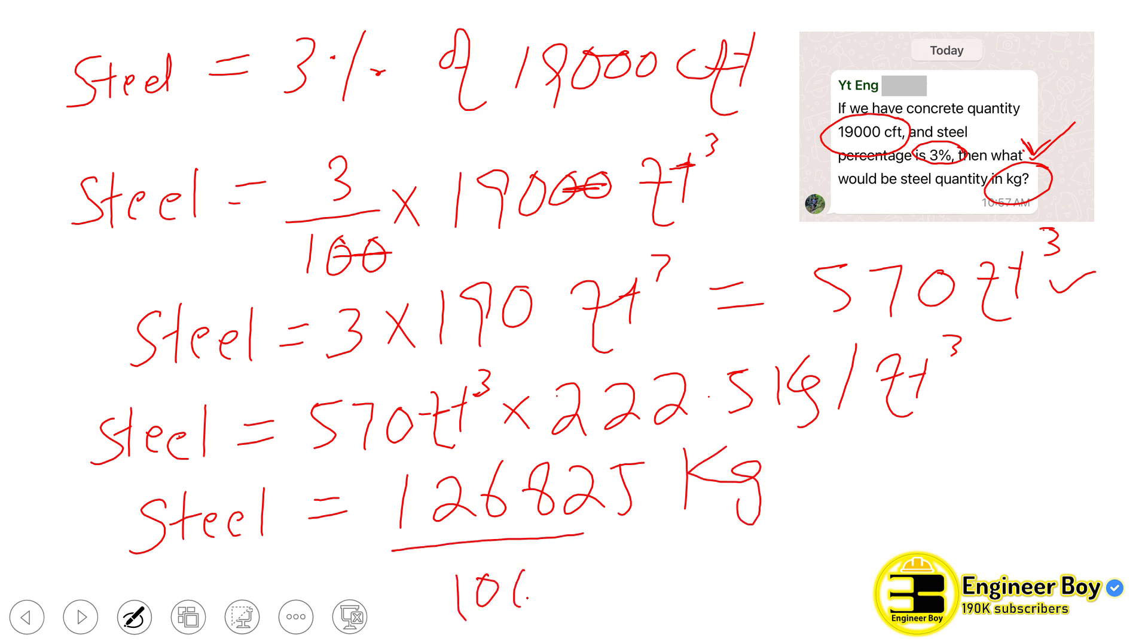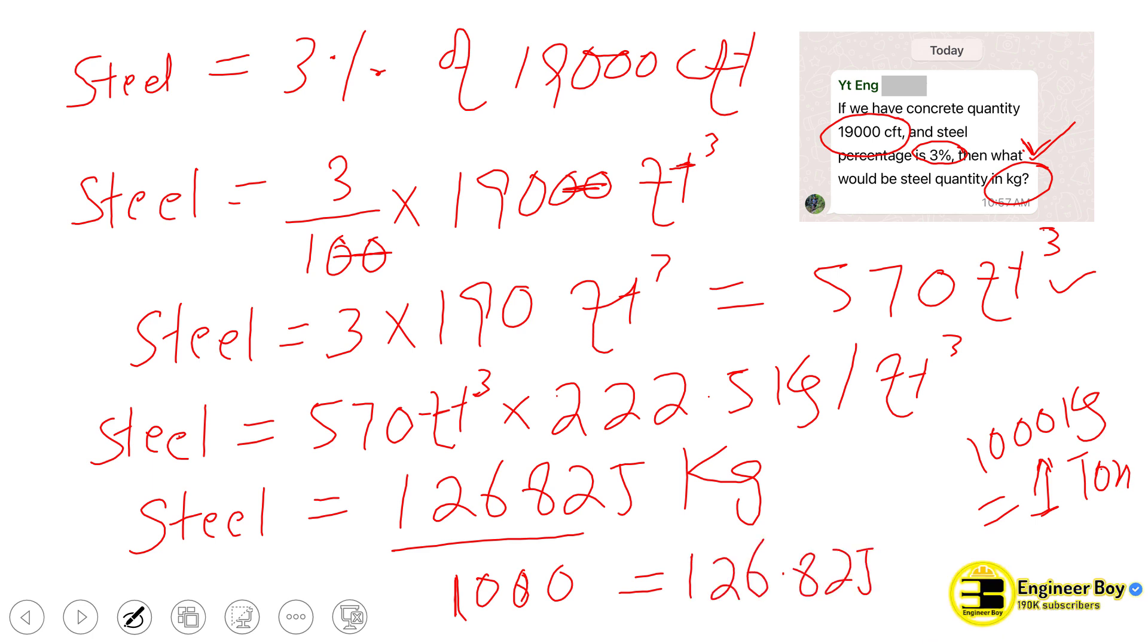You can also convert this into tons if you want. Just divide the same value by 1000, because 1000 kg is 1 ton. If you divide, we can have the steel quantity in tons which must be 126.825 tons. So simple, and this is how we can do it.